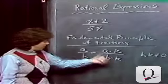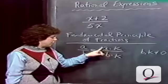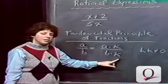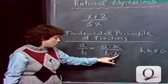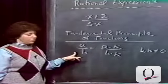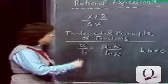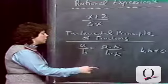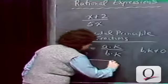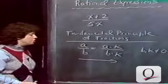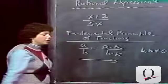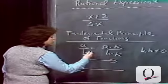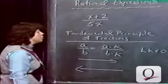Reading the other way, if you start with a fraction ak over bk and divide the top and bottom by the same non-zero quantity, you also get an equivalent fraction. We will use this principle in both directions: when building a fraction to higher terms, and in reverse when reducing a fraction to lowest terms.